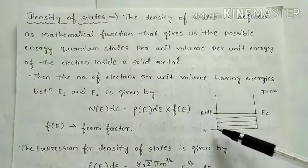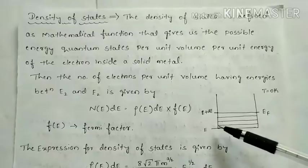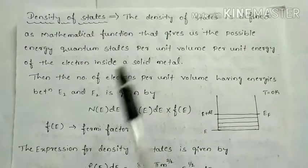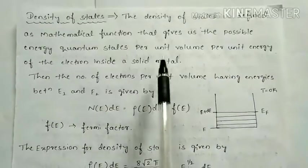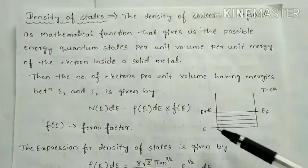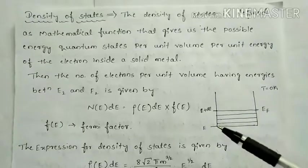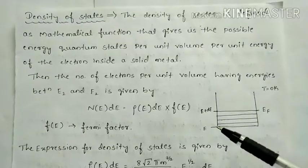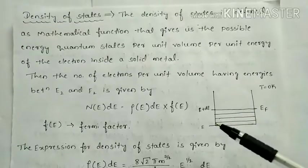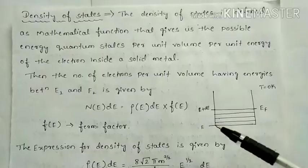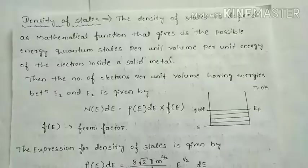Over a small unit energy interval, we look at how many number of density of states are there. That is the reason we define it as the possible energy quantum states per unit volume per unit energy — from this energy state to this energy state, how many number of density of states are present inside a solid metal. This is how we define the density of states.